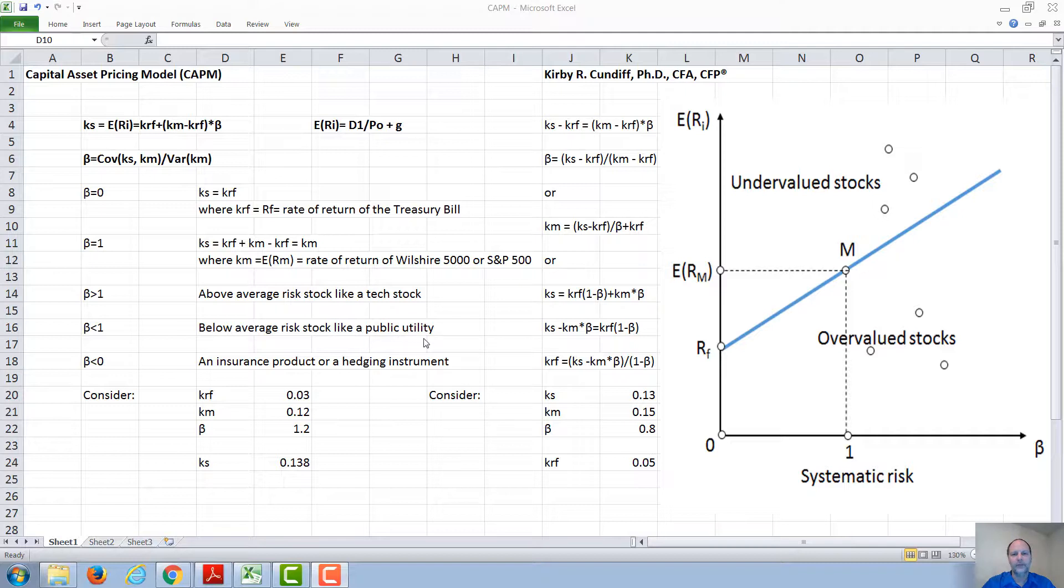A rare circumstance where they might lose money would be during partial deregulation in California, where retail electricity rates were price controlled, but wholesale rates were allowed to fluctuate. Wholesale rates at one point went above retail rates.